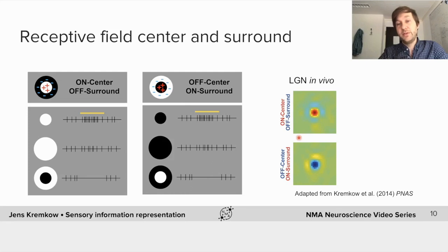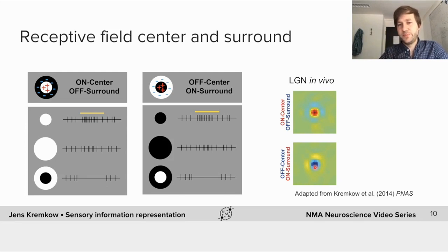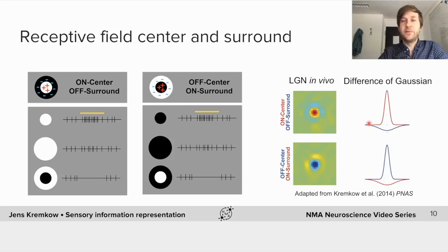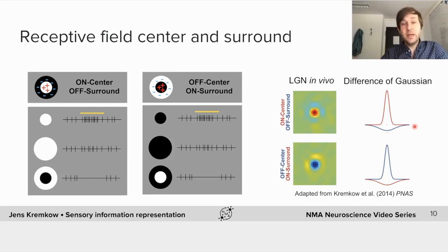These on-center off-surround cells are found in the retina and LGN, and they are essentially spot detectors. Here I present the receptive field measured in vivo, color-coded red for on and blue for off. You can see the on-center cell has a small receptive field with a faint surround, and the off-center cell is the other way around. These are classic examples of LGN neuron receptive fields, and they are often modeled as a difference of Gaussians, where the on-center is a small Gaussian representing the excitatory part, and the suppressive surround is a Gaussian with a wider sigma.